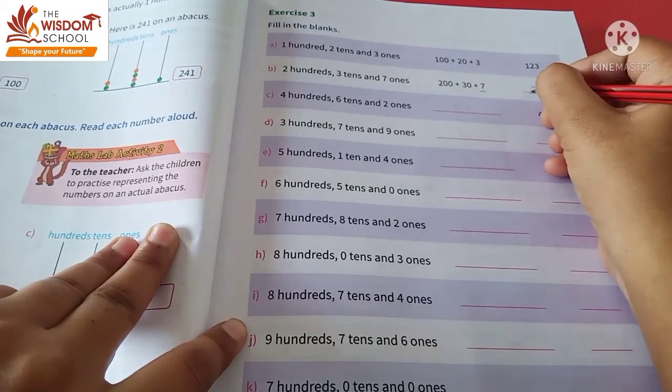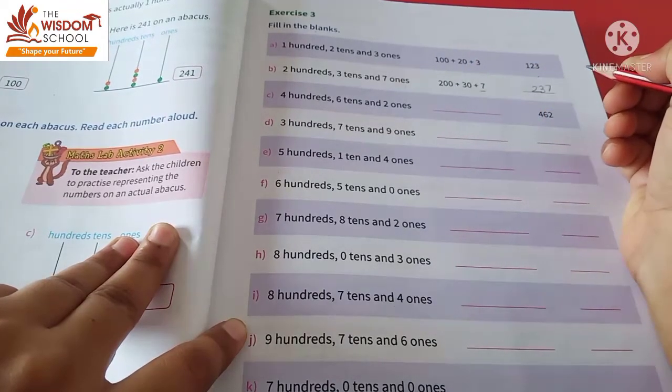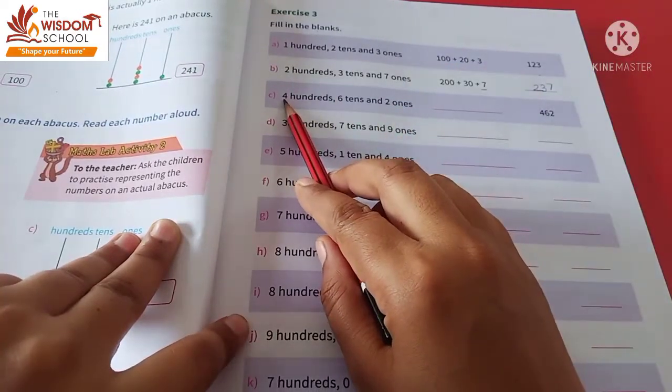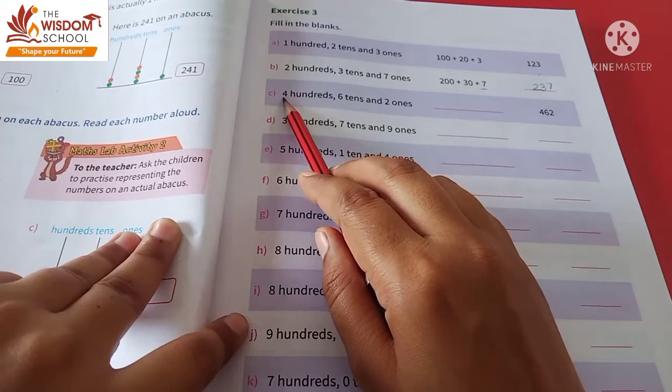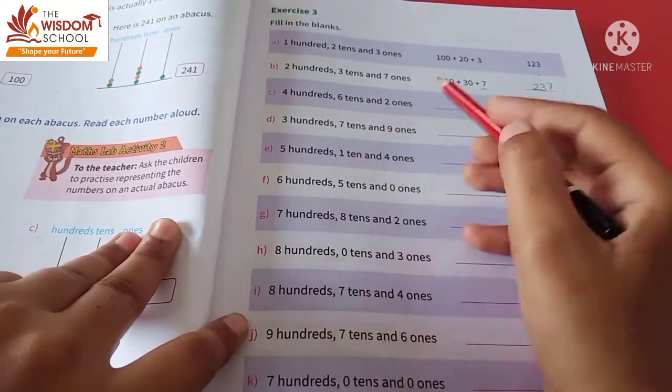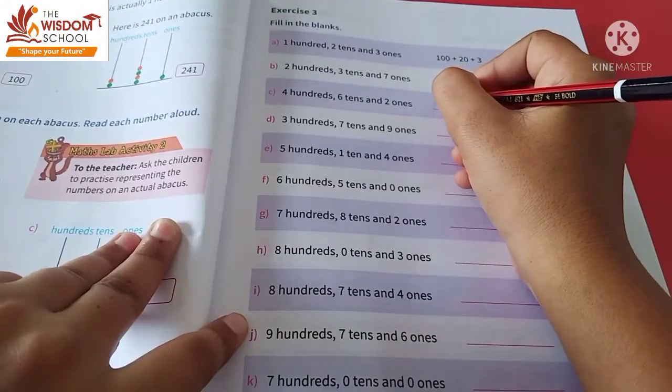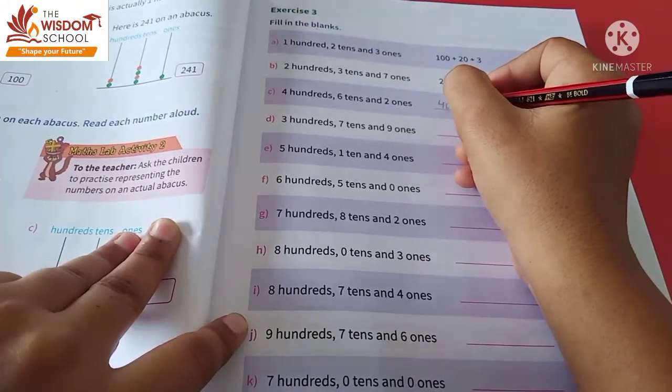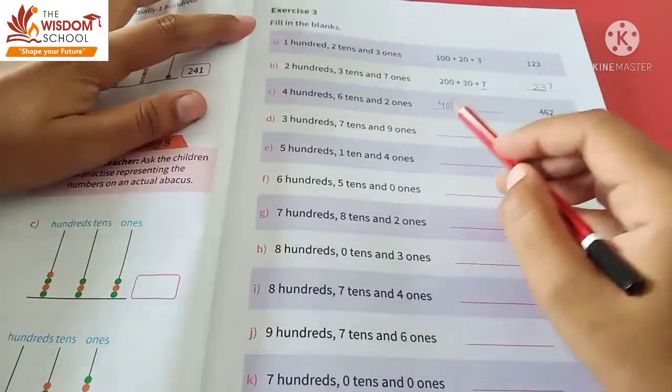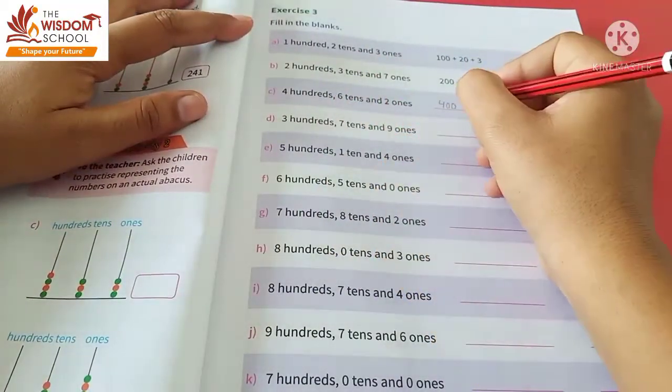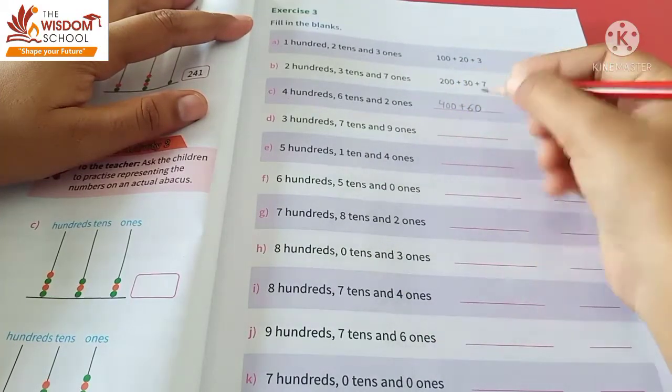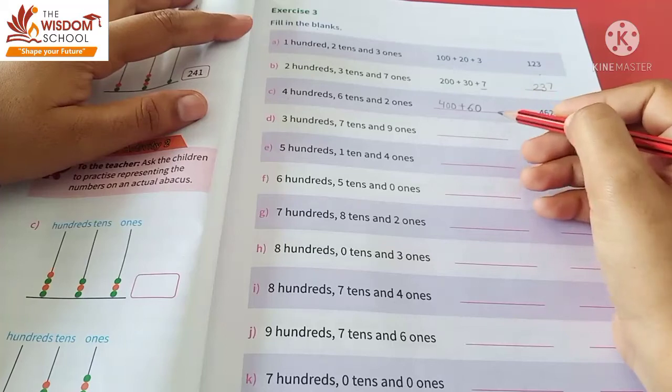Children, this way you will solve it. Let's look at the third one. It says 4 hundreds, 6 tens, and 2 ones. So we will write 400 for 4 hundreds, and for 6 tens we will write 60. Sixty forms 6 tens.